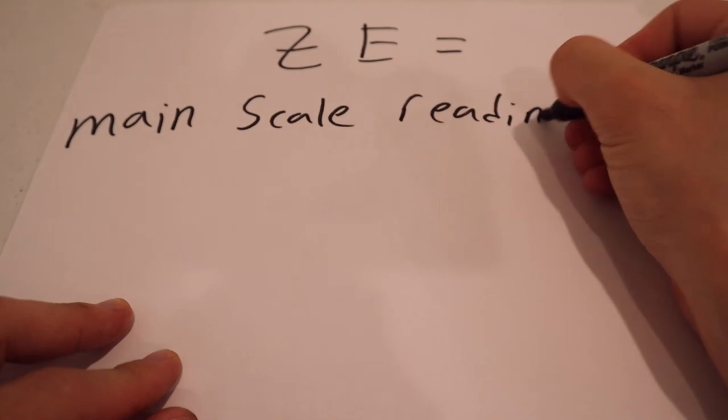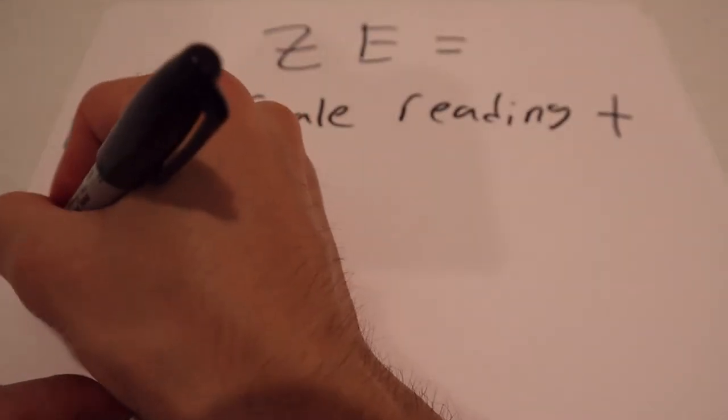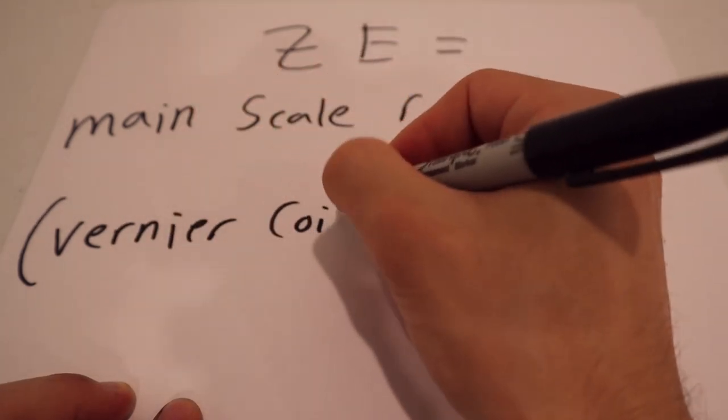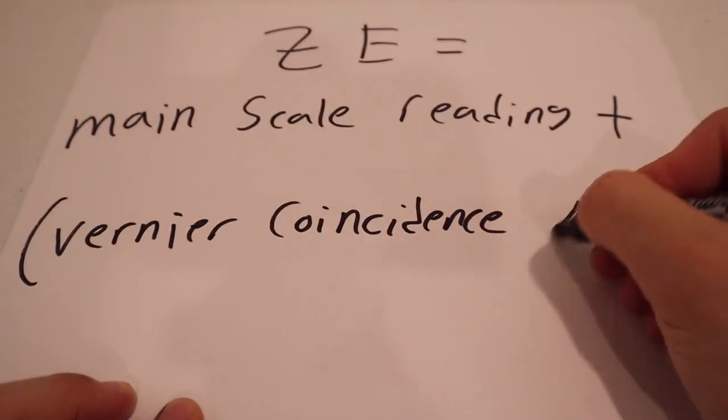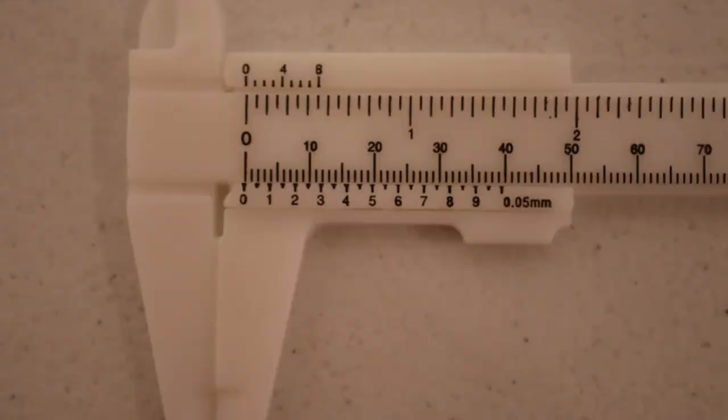Zero error is determined by adding the main scale reading to the vernier coincidence multiplied by the least count. Vernier coincidence simply represents how many divisions it takes before a tick mark on the vernier scale lines up with a tick mark on the main scale, but we will discuss this in more depth later.